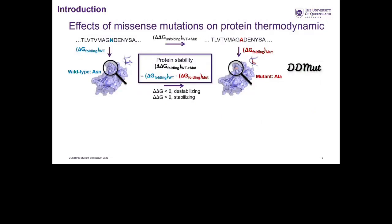The effects of missense mutations on proteins can be characterized as a thermodynamic cycle. When a protein folds from the 1D sequence to the 3D structure it releases the Gibbs free energy delta G folding, and the difference between the wild type and the mutant determines the effects of mutations on protein stability. In my previous work I developed DDMut, a deep learning model to predict the delta delta G of folding.